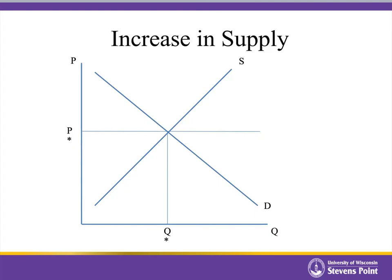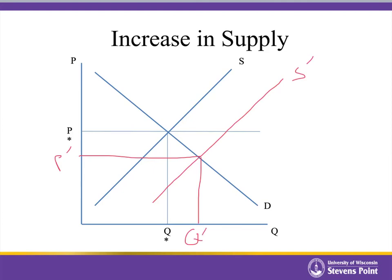What about an increase in supply? Perhaps the inputs used to produce the product become cheaper, or there's a new cost-saving technology, or more firms enter the market. An increase in supply means the supply curve shifts to the right. That creates a surplus if the price doesn't change, and that surplus puts downward pressure on the price. The price falls until it reaches the new equilibrium level — a lower equilibrium price and a higher equilibrium quantity than where we started. Many students get confused here and think demand should also shift, but buying more things simply because the price went down means we're moving along the demand curve — it does not create a new shift.